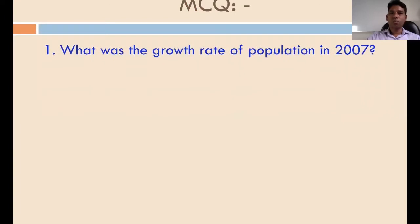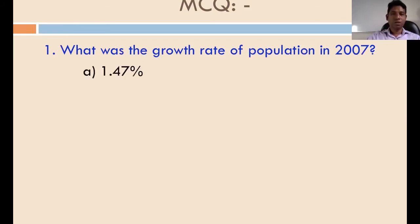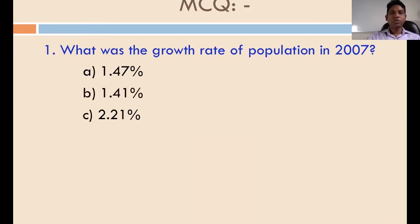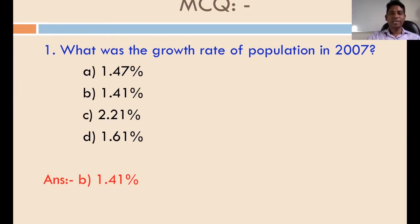MCQ number one: what was the growth rate of population in 2007? The options are one point forty-seven percent, two point twenty-one percent, and one point sixty-one percent. The answer is one point forty-one percent. Thank you very much.